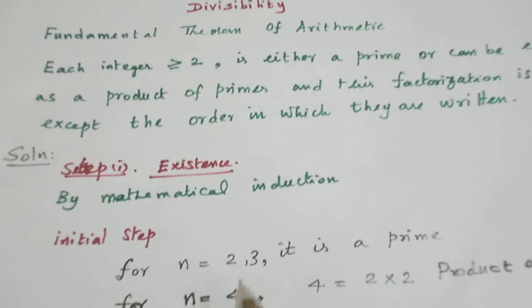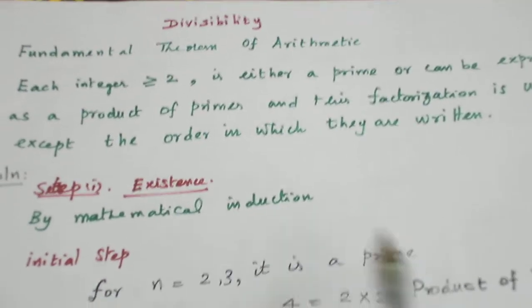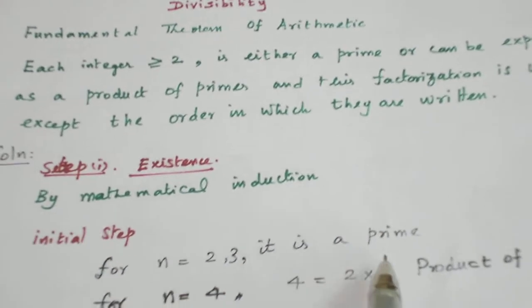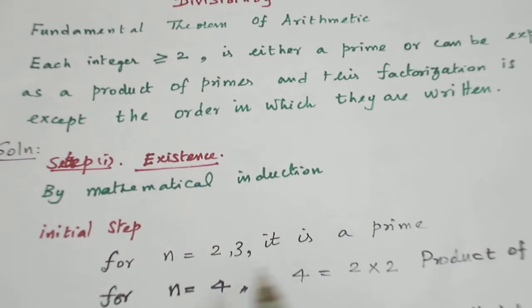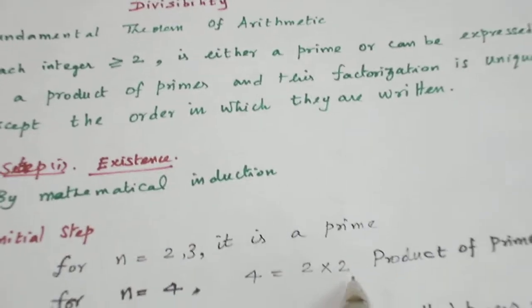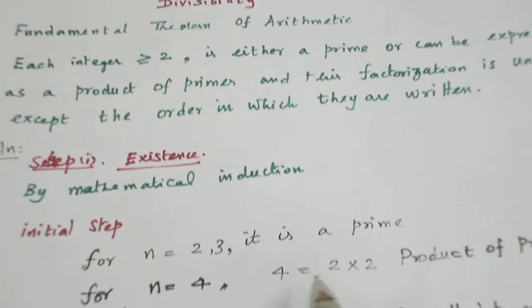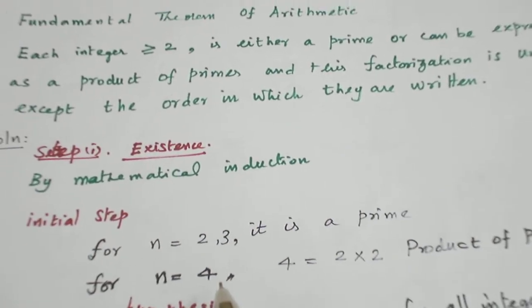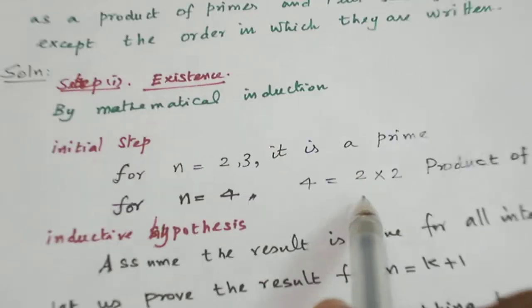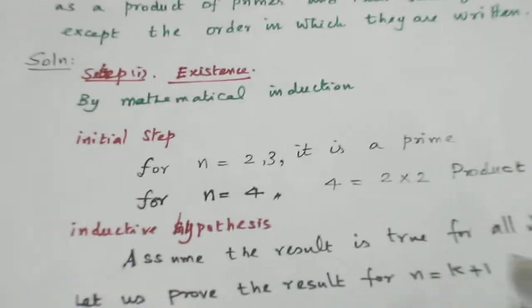First, the initial step: n = 2 is a prime, n = 3 is a prime, n = 4 is not a prime but it can be written as a product of primes, n = 5 is a prime, n = 6 is not a prime — it can be written as a product of primes, 2 × 3, and so on.